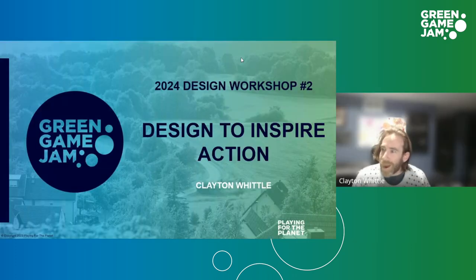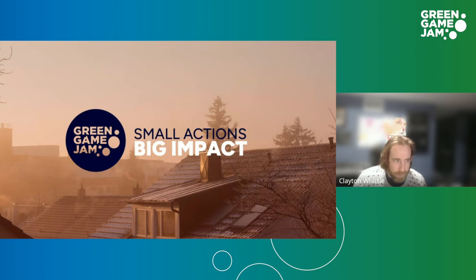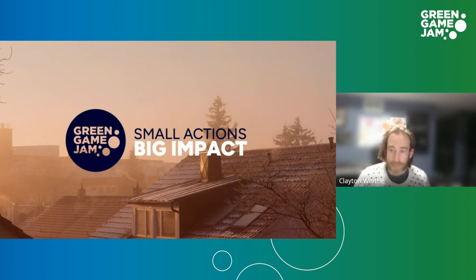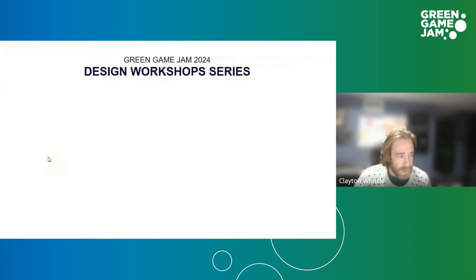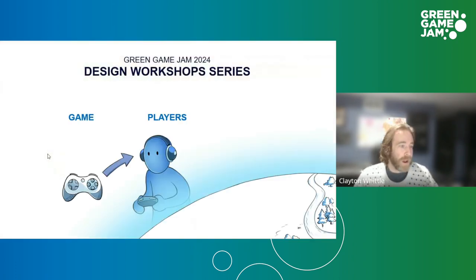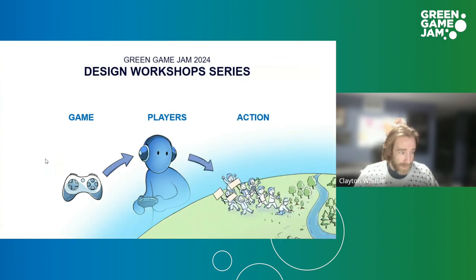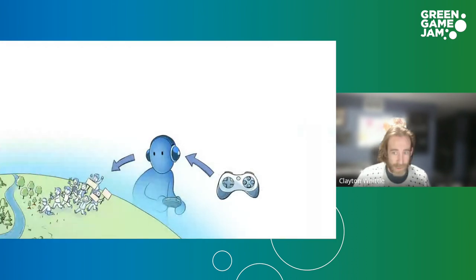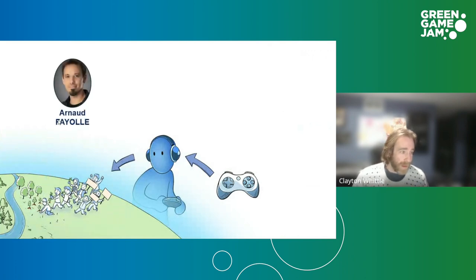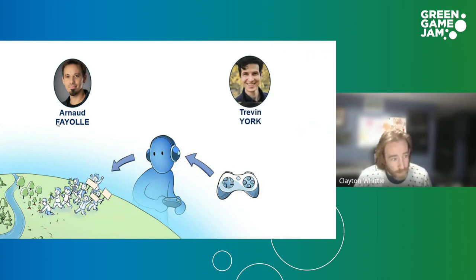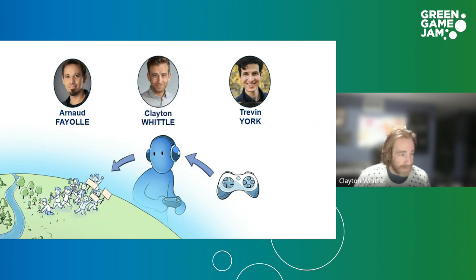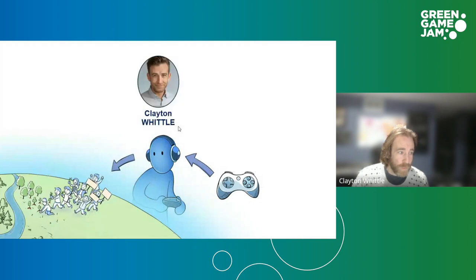Hi, thank you everyone. I'm Clayton Whittle. This year we're working to guide you all through your Green Game Jam's mission of inspiring actions that lead to a big impact. As Arnaud outlined in the first workshop, we are here to explore exactly how well-designed games can transform their audiences to inspire real-world action. Arnaud began by outlining how to identify your game's unique impact potential, and in the next workshop Trevin will show you how to design specifically for intended impact. Today I will explore the science and psychology of what people actually need in order to take climate action and how games are able to achieve that.